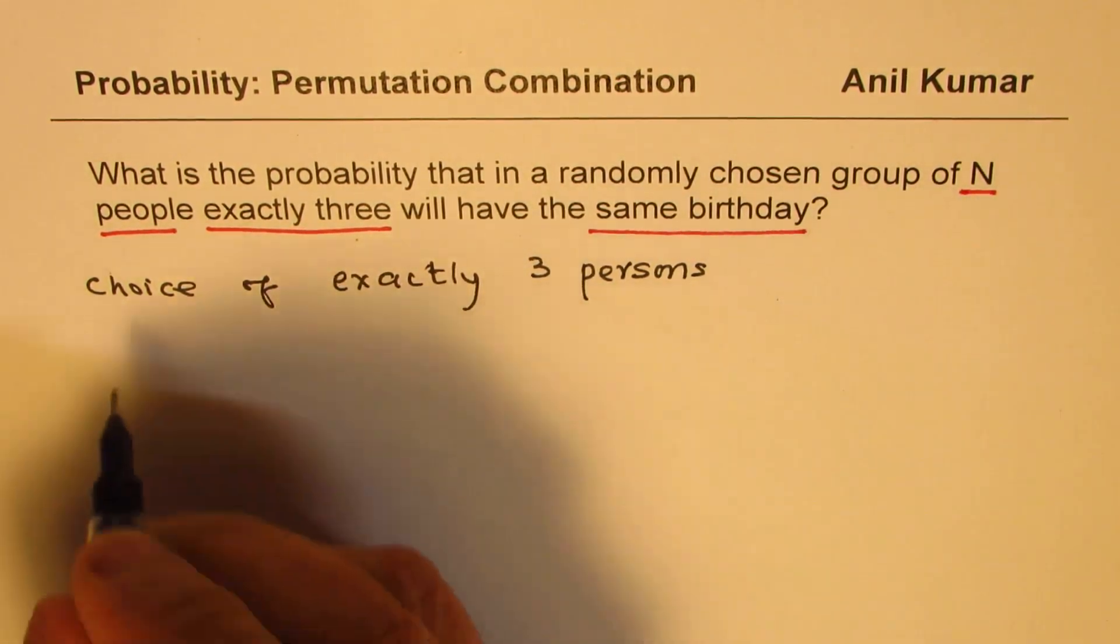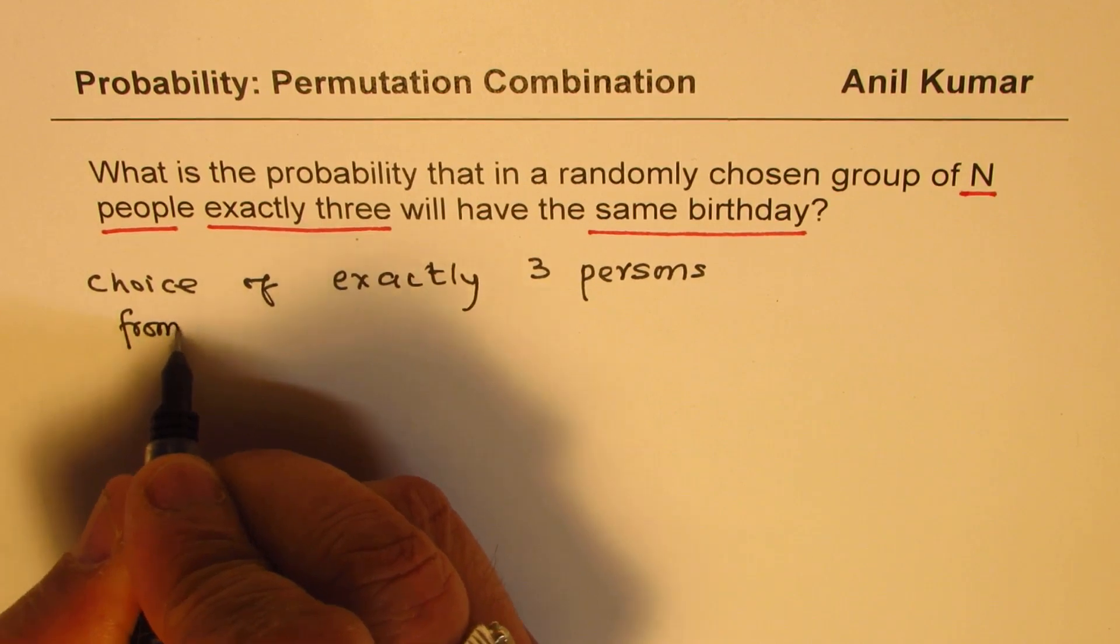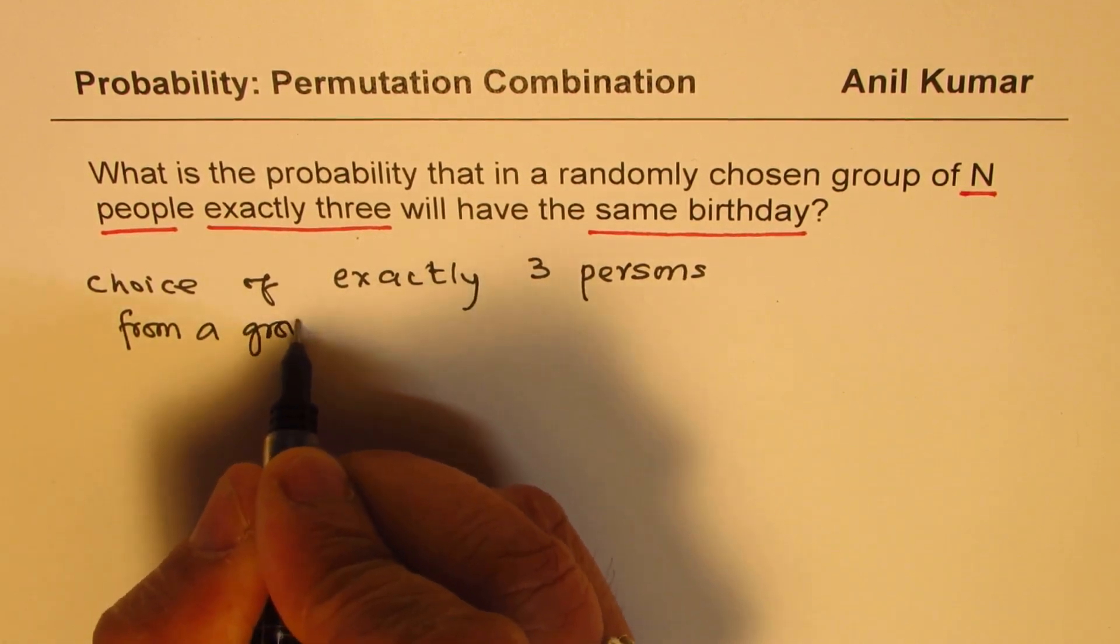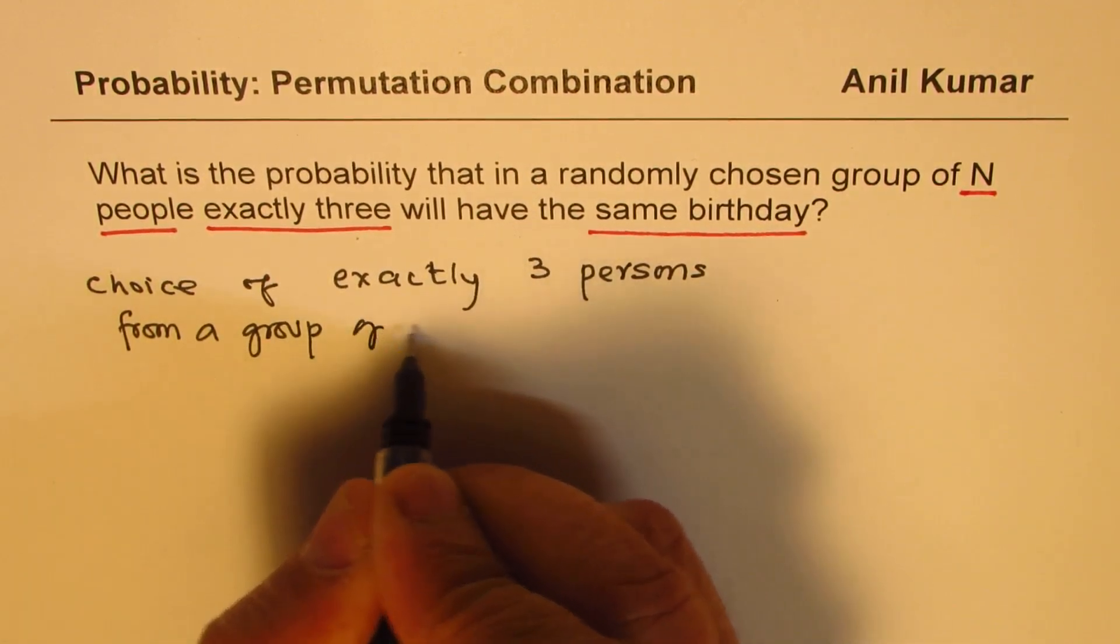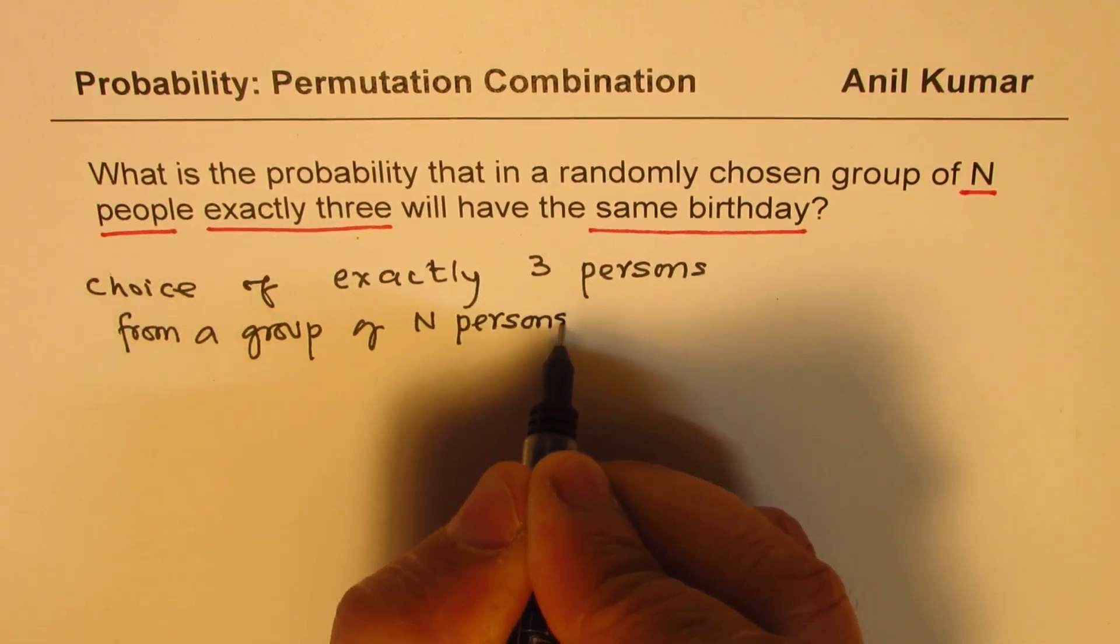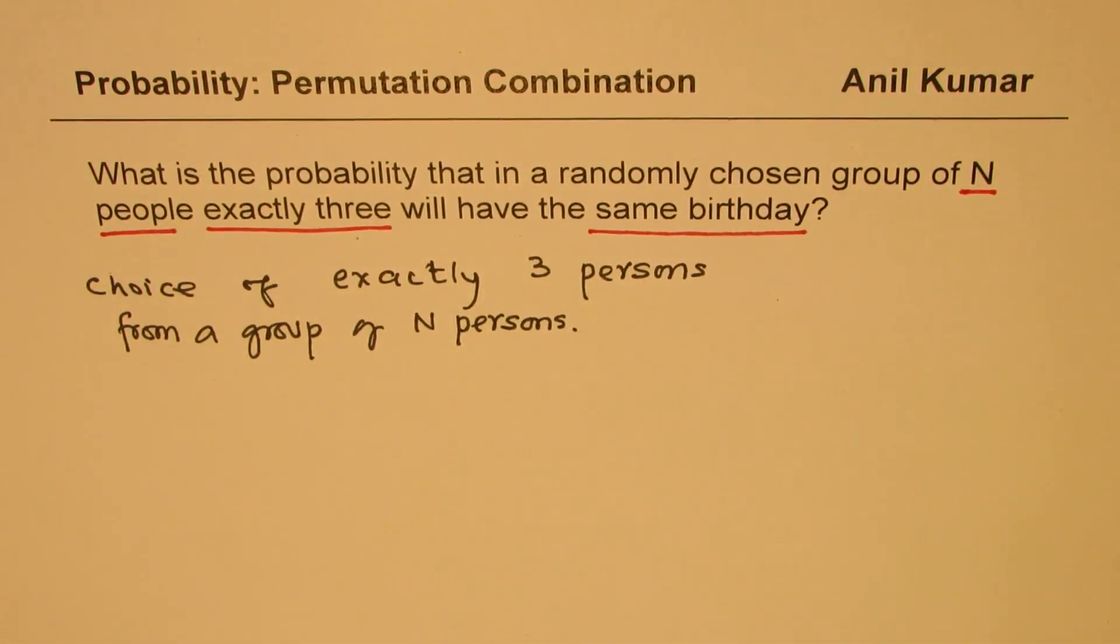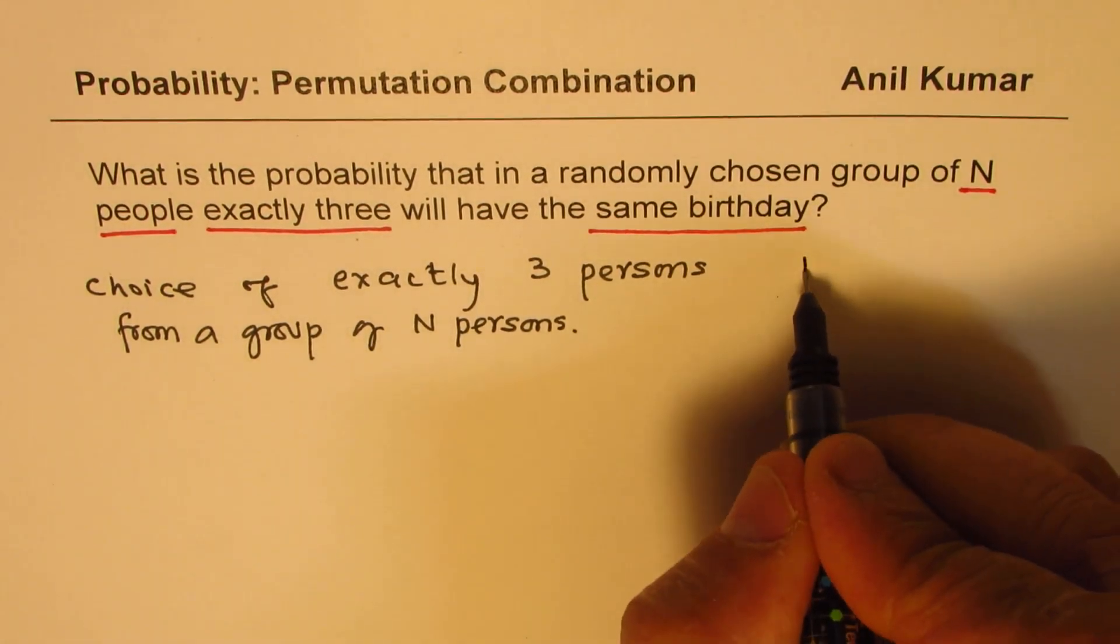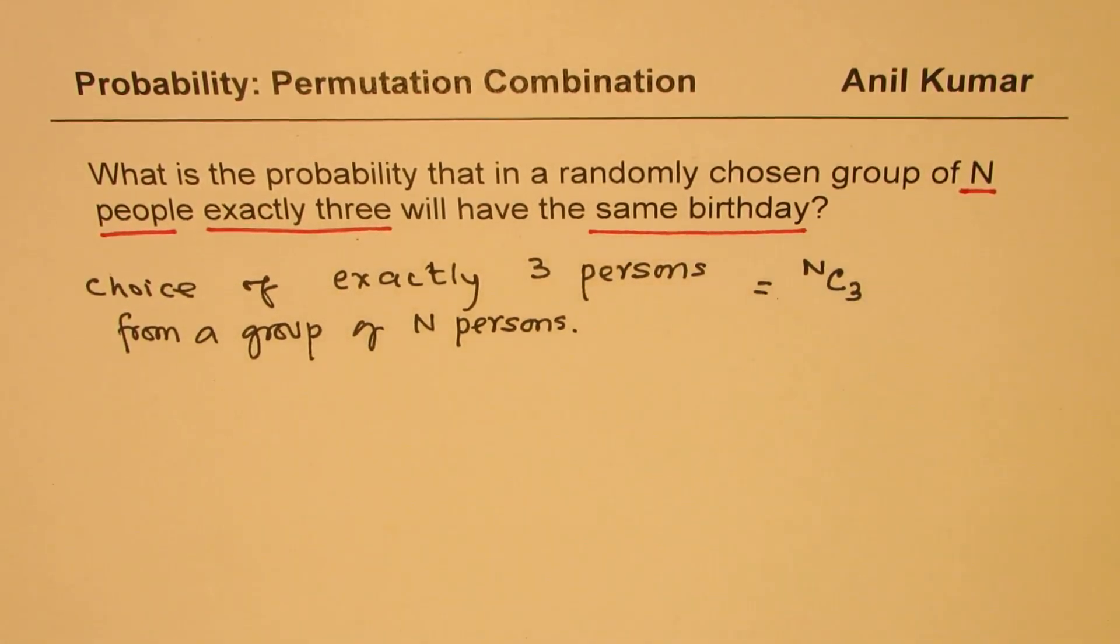From a group of n persons. Now, choice will be nC3. So we select three out of a group of n. How many combinations can you have? nC3 is the total number of combinations we can have.